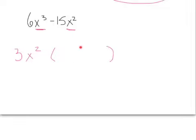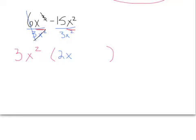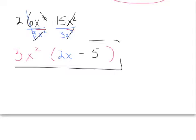If we didn't use prime factorization, how do we know what ends up inside the parentheses? Here's an easy way: divide every term by the GCF. It's like dividing by 3x². So 6 over 3 is 2, and x³ over x² is just x, leaving 2x. On the right, the x² terms cancel, 15 over 3 is 5, and there's a minus sign. Our answer is the same: 3x² times the quantity 2x minus 5, without needing prime factorization.